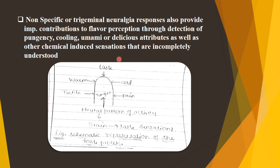This non-specific or trigeminal neuralgia is a chronic pain condition which helps detect whether the food or flavor is of pungent taste, cool, hot, or delicious, as well as other chemically induced sensations. Sometimes when we eat something, we cannot easily recognize the taste — it could be mixed, cold, hot, spicy, or sweet — that incompletely understood sensation is what we refer to as trigeminal neuralgia.